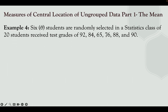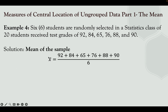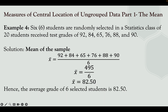Example 4: 6 students are randomly selected from a statistics class of 20 students and received test grades of 92, 84, 65, 76, 88, 90. Since 6 students are randomly selected out of 20, this is a sample mean. The mean of the sample equals (92+84+65+76+88+90) divided by 6, which is 495 ÷ 6 = 82.50. Hence, the average grade of the 6 selected students is 82.50.